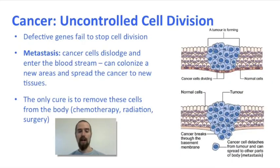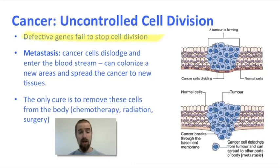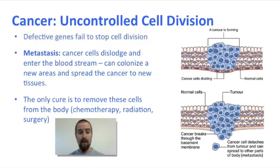Uncontrolled, unregulated cell division is called cancer, and cancers of various kinds are a leading cause of mortality in adults. Cancer is caused by defective genes that fail to stop cell division, so that cells just keep dividing without end. This is a much messier process than normal cell division, and the cells undergoing uncontrolled growth clump together in growing masses called tumors.